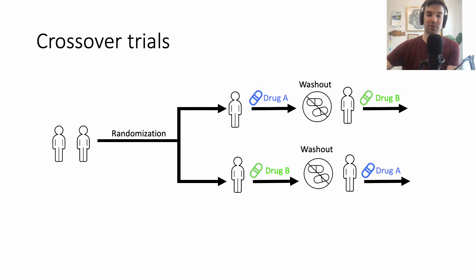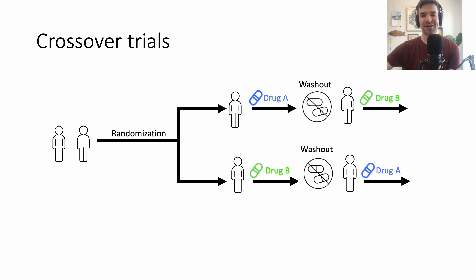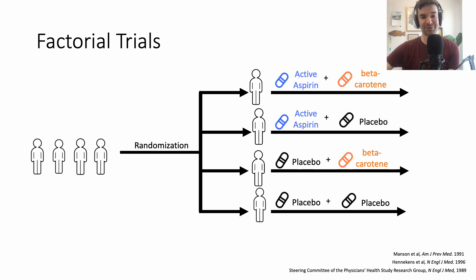Next up are crossover trials. In a crossover trial, the individual is randomized to drug A, there's a washout period, and then they receive drug B. These are relatively rare in medicine, so if you're confused by the design, don't worry. It only works for certain drugs that don't persist in the system for a long time.